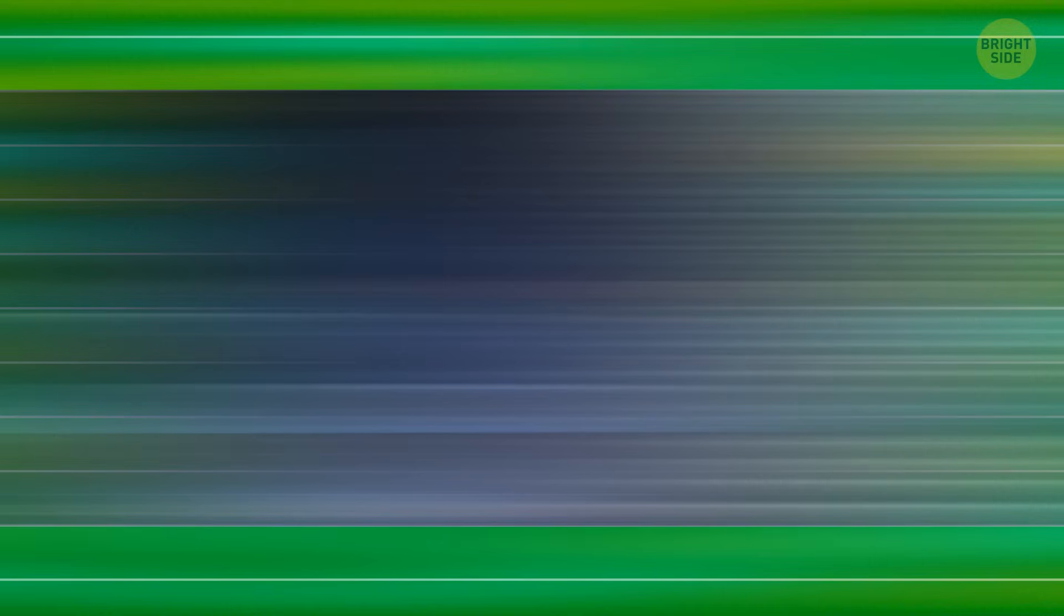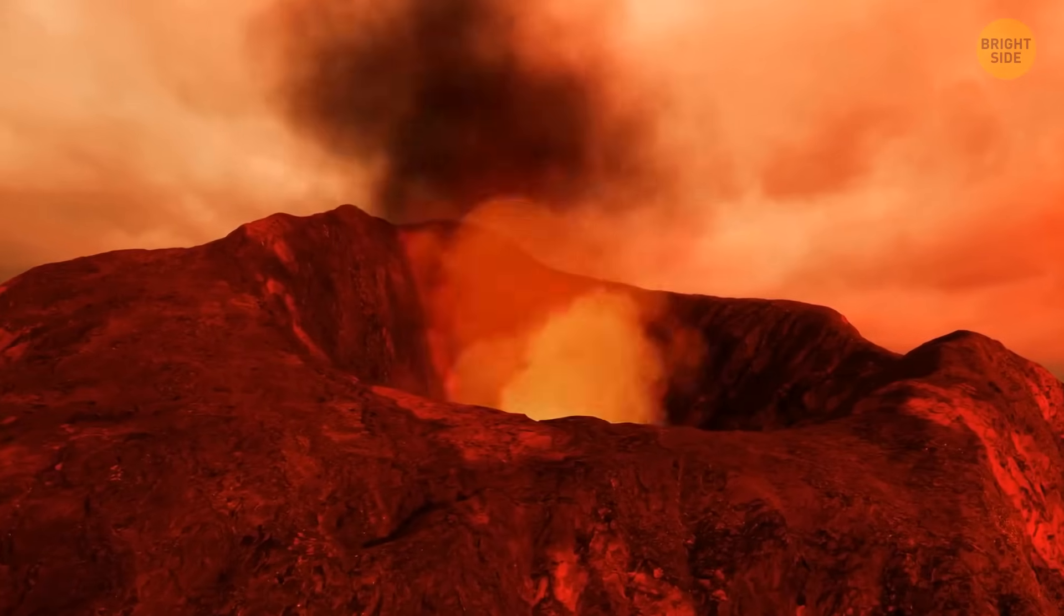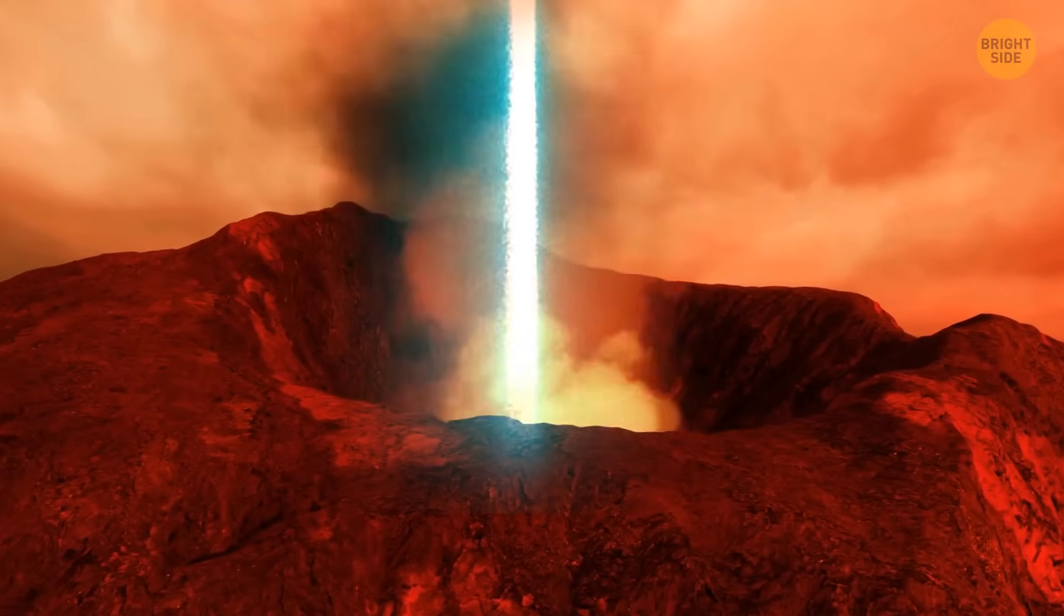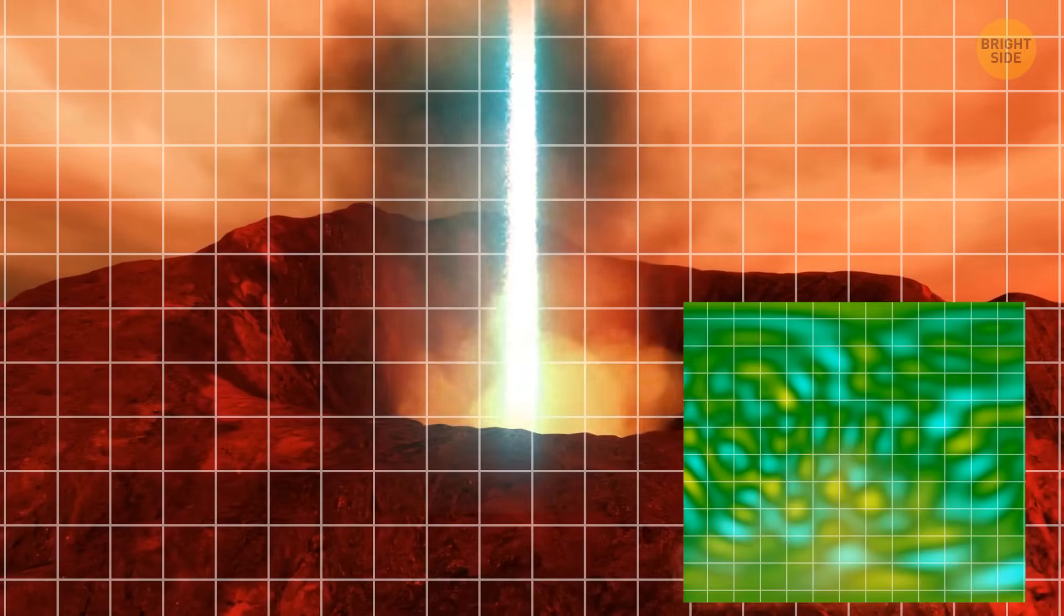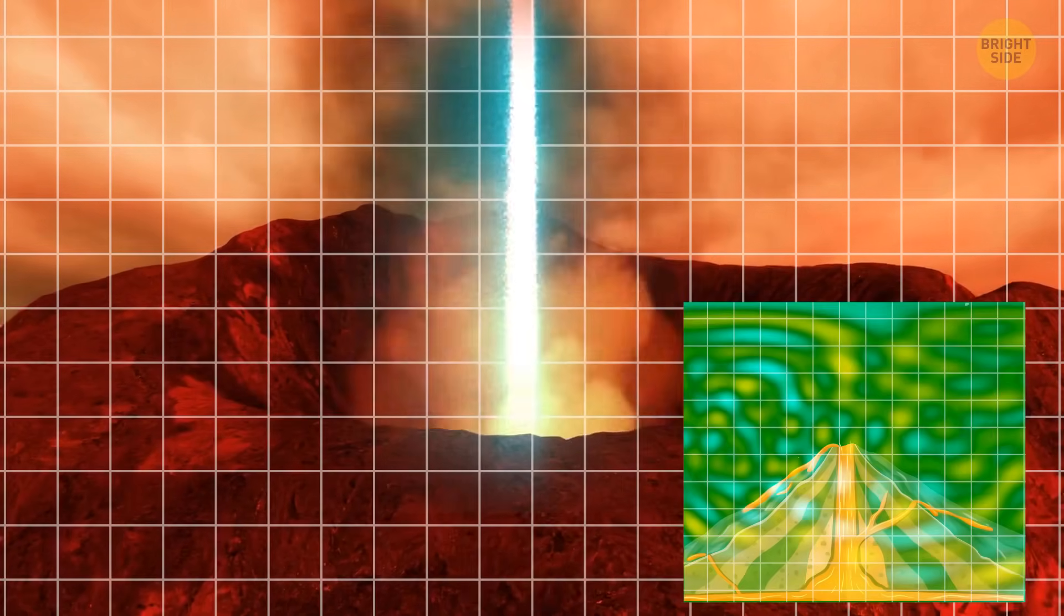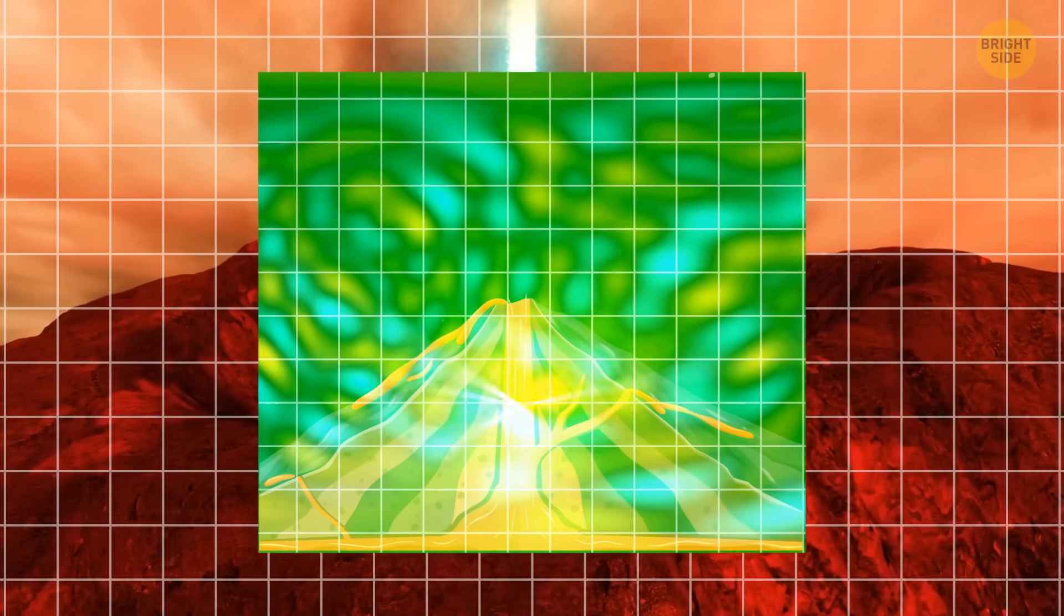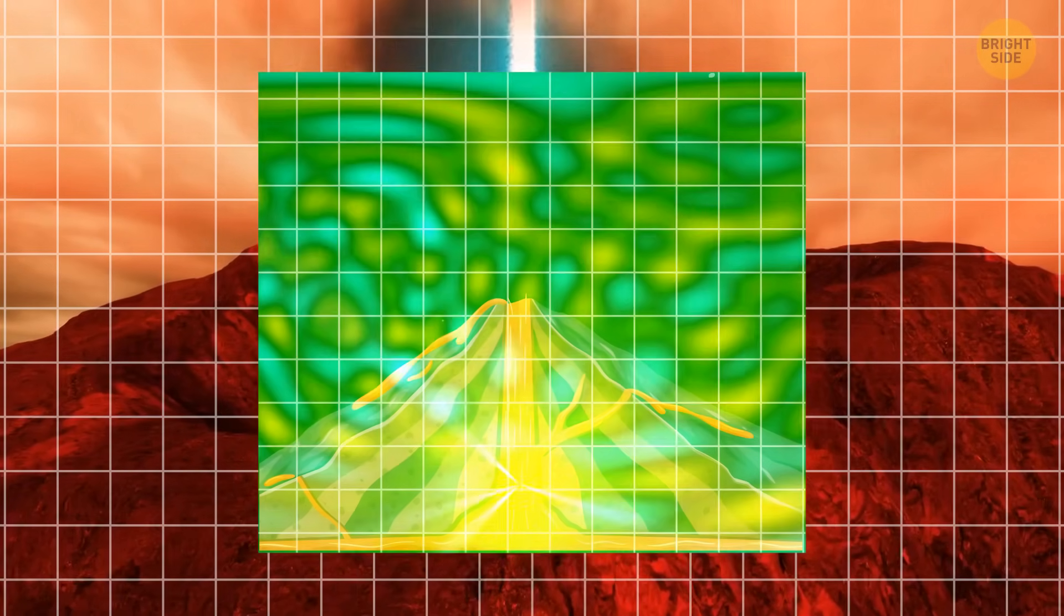Scientists also used them to look inside volcanoes. They used the same method as with pyramids. When these rays pass through a volcano, scientists can study how they move to create images of what's inside. This helps researchers figure out where different materials are in the volcano, and keep an eye on any signs that it might become active.